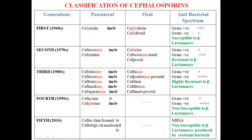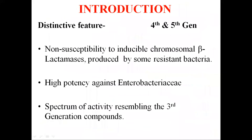The 1st generation cephalosporins were designated as such based on their antimicrobial properties, while the 2nd and 3rd generation cephalosporins are also referred to as extended-spectrum cephalosporins. A distinctive feature of the 4th and 5th generation cephalosporins is that they are non-susceptible to the inducible chromosomal beta-lactamases produced by some resistant bacteria.